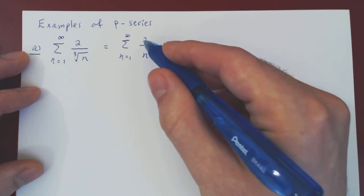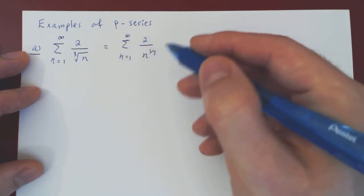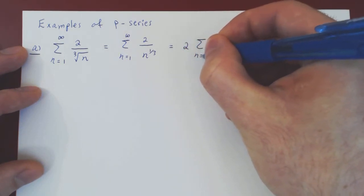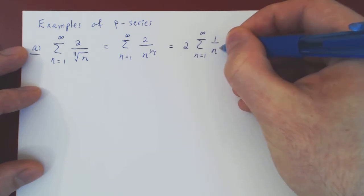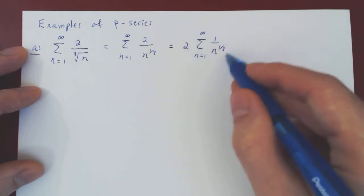There's an annoying 2 here, but as it is a constant multiple with respect to n, we can just factor it outside the series. This is simply 2 times the sum from 1 to infinity of 1 over n to the 1 over 3. And now we clearly have our generic p-series.